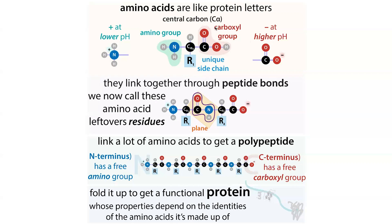When these amino acids link together, they do so using the amino group of one amino acid and the carboxyl group of another. They do this by losing the equivalent of water to form a peptide bond, which is a type of amide bond. What you'll see here is that you've lost that carboxylic acid group, so now we can't really call these amino acids.